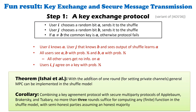Once we have a key exchange protocol, Ishai et al. observed we can use it to implement secure computation in the shuffle model: use one extra round for key exchange to create private channels, then apply an existing MPC protocol. Combining this with the secure two-round protocol of Applebaum et al., we get a generic secure computation in the shuffle model using three rounds.